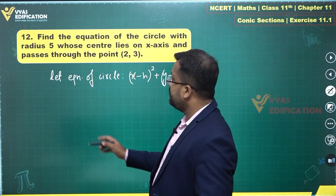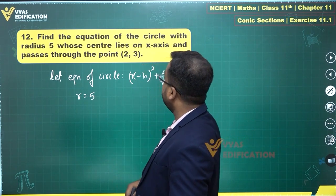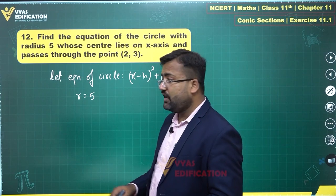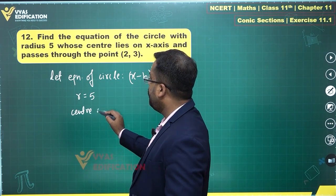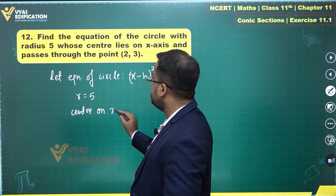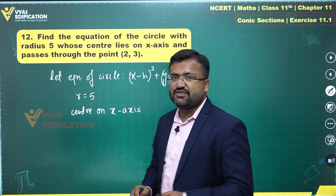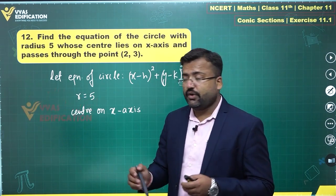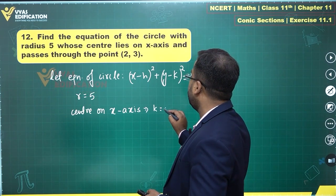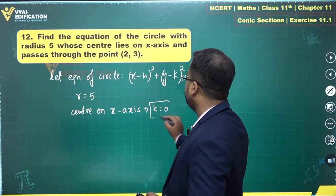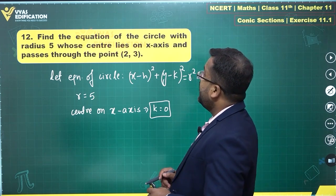What is given here: radius equals 5 — that's the first condition. The center lies on the x-axis — that's the second condition. Any point on the x-axis will be of the form (h, 0), so this tells us that the value of k is 0.